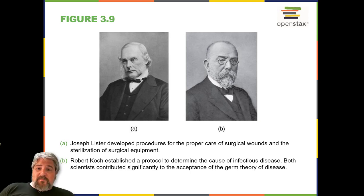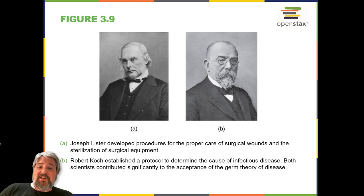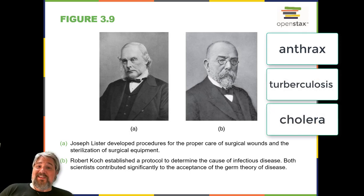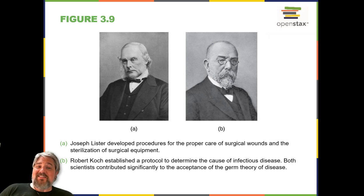A few years later, Robert Koch proposed a series of postulates — Koch's postulates — based on the idea that the cause of a specific disease could be attributed to a specific microbe. Using these postulates, Koch and his colleagues were able to definitively identify the causative pathogens of specific diseases, including anthrax, tuberculosis, and cholera. Koch's one microbe, one disease concept was the culmination of the 19th century's paradigm shift away from the miasma theory and toward the germ theory of disease. Koch's postulates are discussed more thoroughly in How Pathogens Cause Disease.